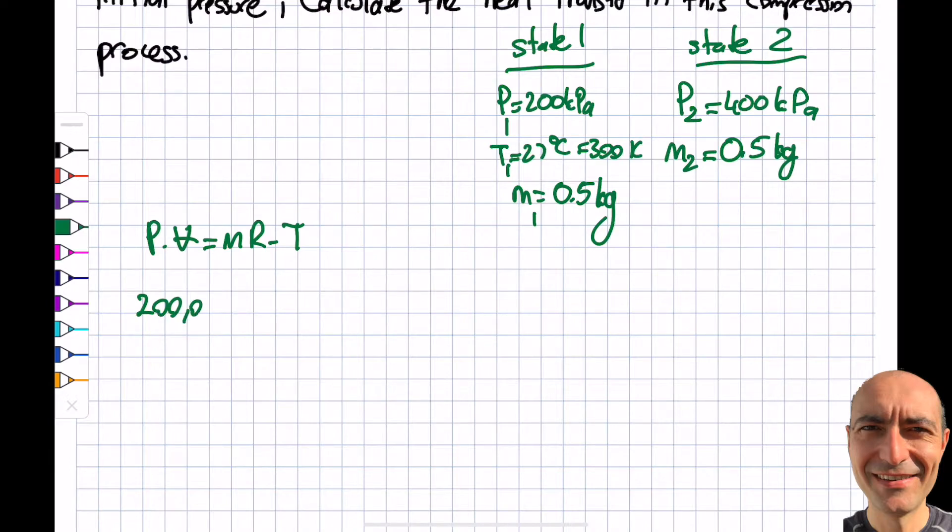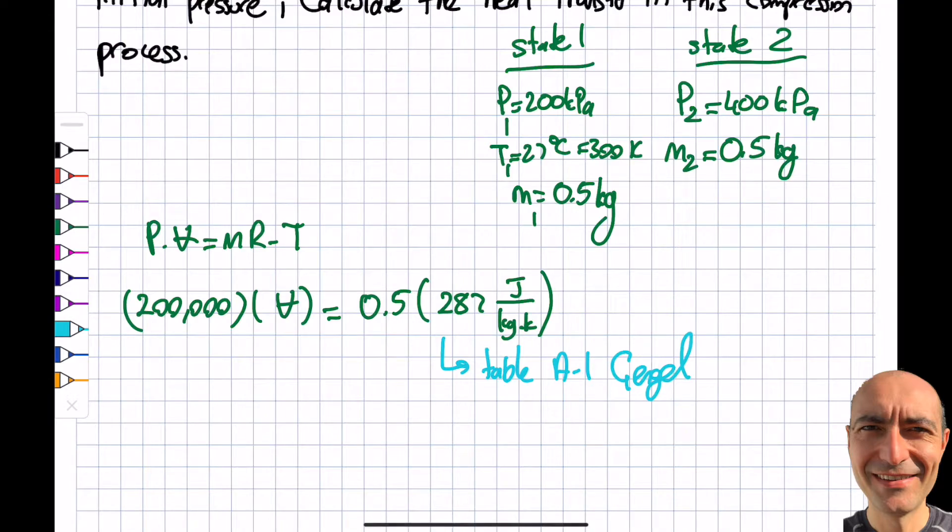So 200,000, I'm just going to use SI. The volume is what I'm after. M is 0.5. This R will be 287 joule per kilogram Kelvin. Where did this come from? This came from table A1 of Appendix 1, Cengel. So that's where I located this. And the temperature is 300 Kelvin. When I do this, I get myself V1 is equal to 0.215 meter cubed.